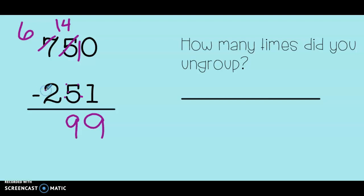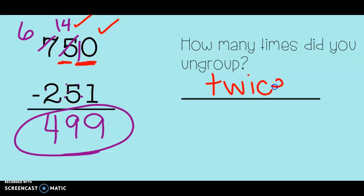And last is 6 minus 2: 6, 5, 4. 499 is my answer. Now let's check at the top to answer our question. Did I need more ones? Yes, I did. Did I need more tens? Yes, I did. So that means for this problem, I needed to ungroup twice.